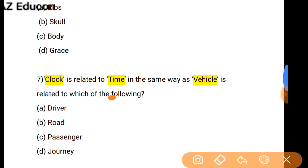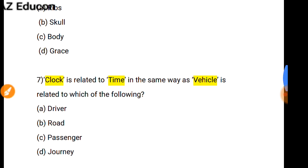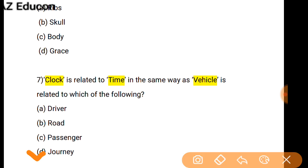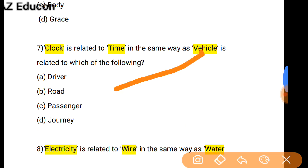Clock is related to Time — for time measurement we use a clock. In the same way, for our journey we use a vehicle. So Vehicle is related to Journey.